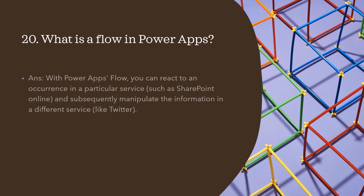What is a flow in Power Apps? A Power Apps flow can react to an occurrence in a particular service — for example, SharePoint Online — and subsequently manipulate information in a different service, such as Twitter. For instance, you can create a Power Automate flow that performs operations when something happens inside a SharePoint Online list or library, then manipulate that data and display it in Power Apps or other services.